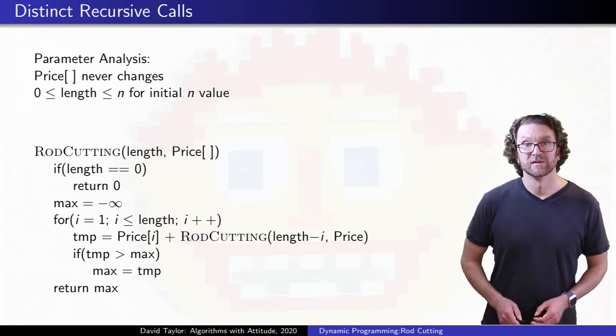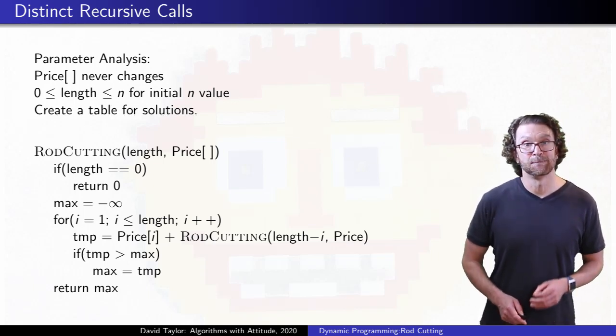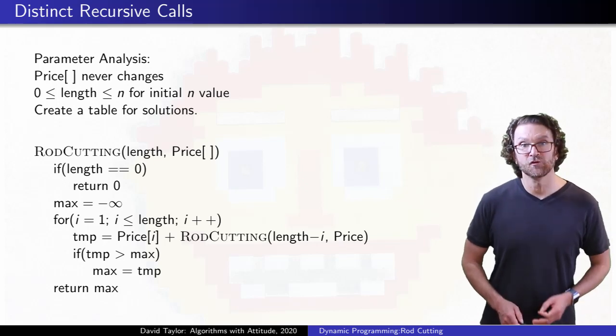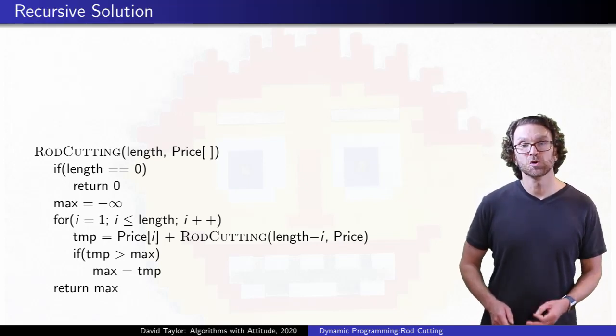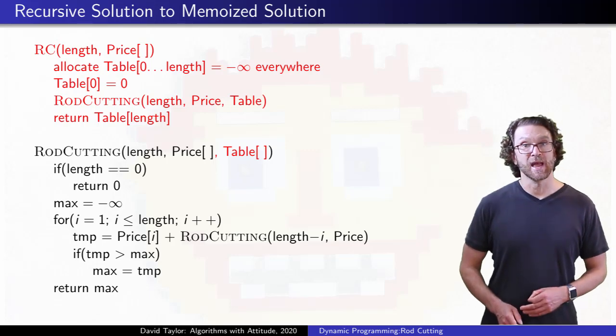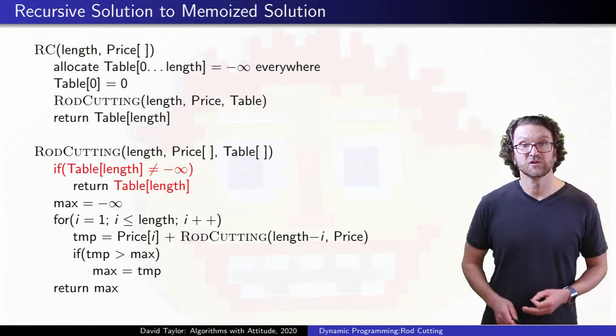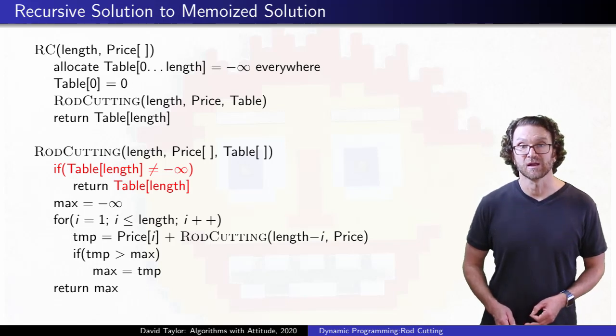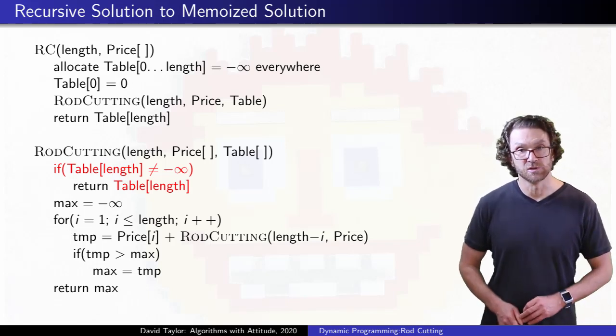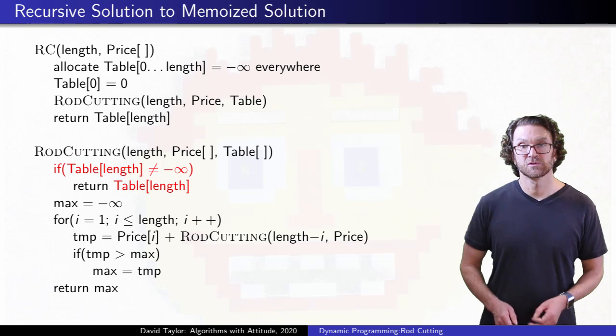That tells us that we can make a table to store the best price for every possible length, to move to a memoized version. Before making any recursive calls, you just look at the table to see if you have already solved the best price for this length rod. If so, don't recompute the answer, just return it.